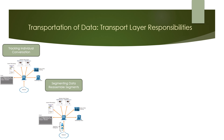The transport layer divides the data into smaller blocks that are easier to manage and transport. The third responsibility is to add header information. The transport layer protocol adds header information containing binary data organized into several fields to each block of data. The values in these fields enable various transport layer protocols to perform different functions. The header information is used by the receiving host to reassemble the blocks of data into a complete data stream for the receiving application layer program.